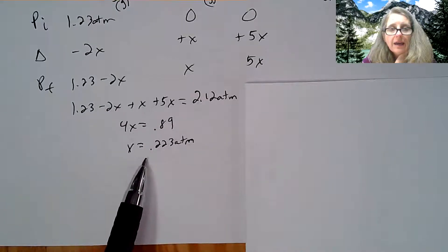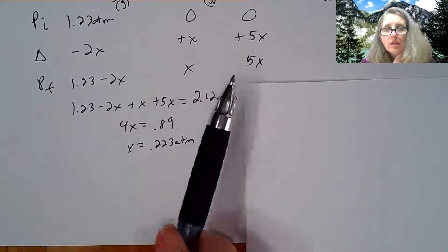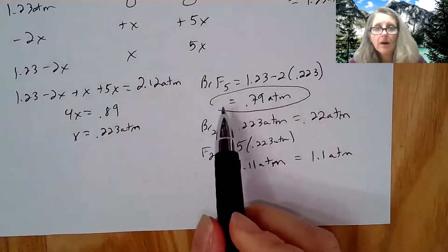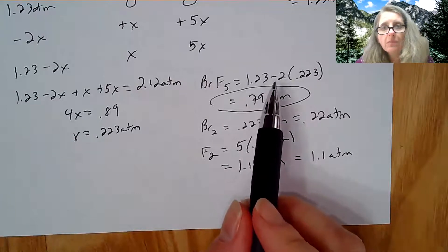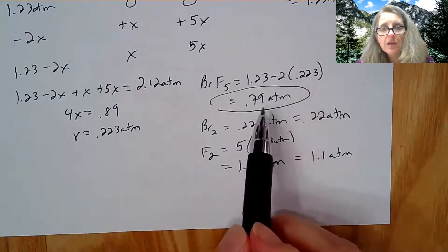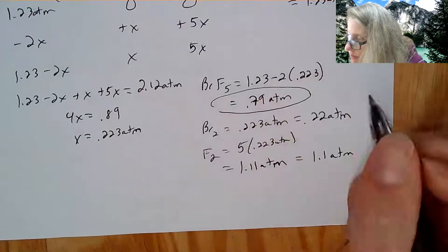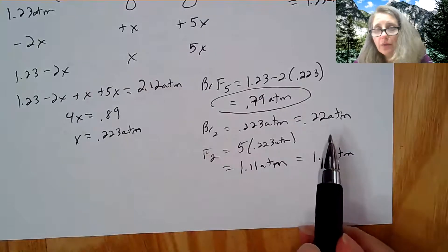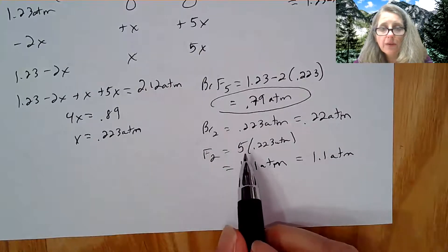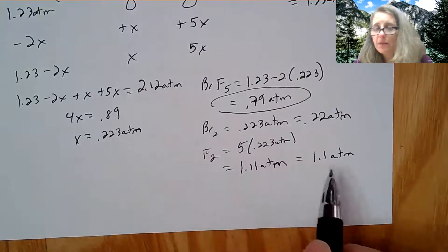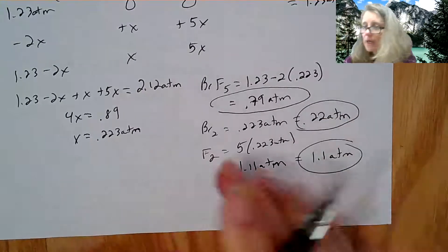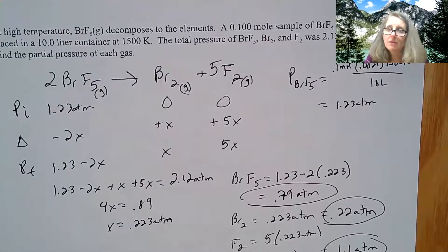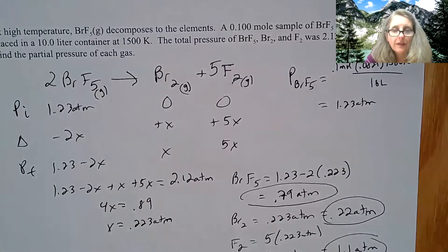All I got to do is take the x and plug it back into each one of these to find the overall pressures. The pressure of the BRF5 is going to be 1.23, the starting, minus 2 times the x, so it's about 0.79 atmospheres. BR2 is just x, so that's 0.22. And F2 is 5 times that, so I get approximately 1.1 atmospheres. This is just another way you can approach the problems - instead of doing everything in moles, try to do stuff in pressure units.